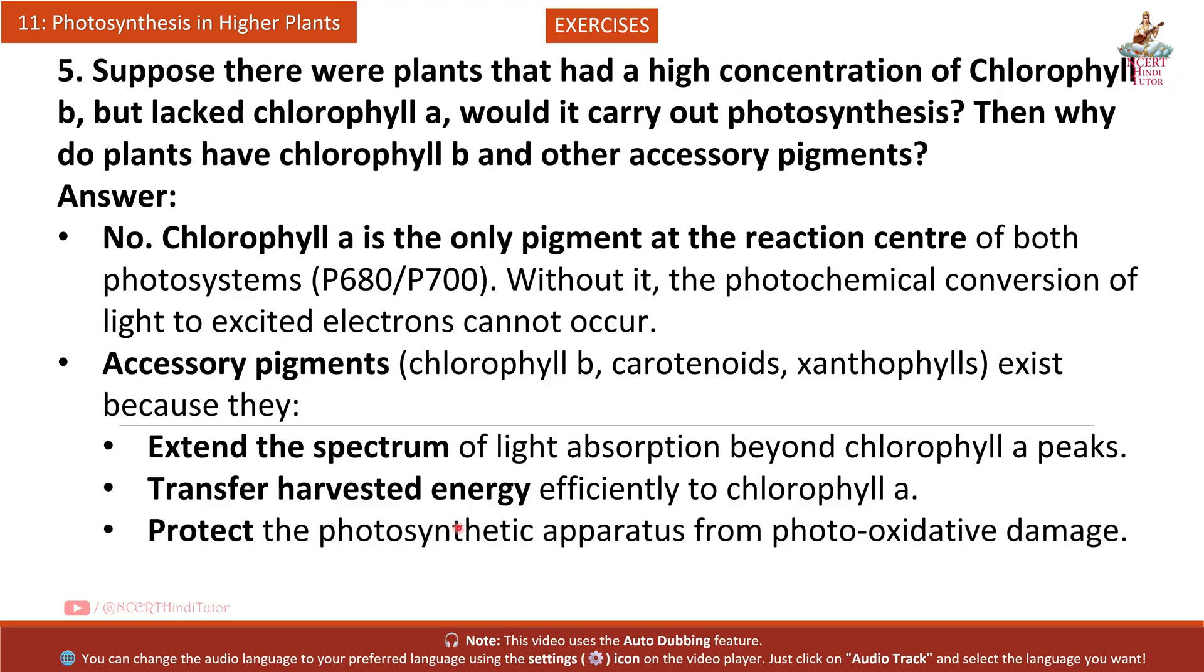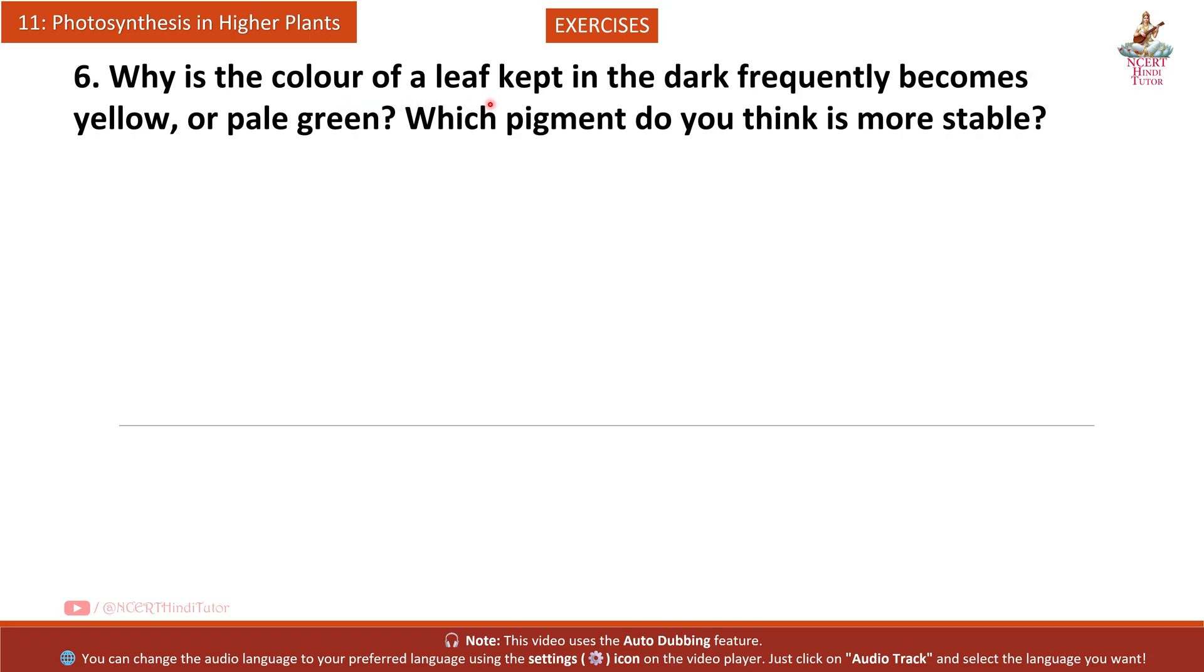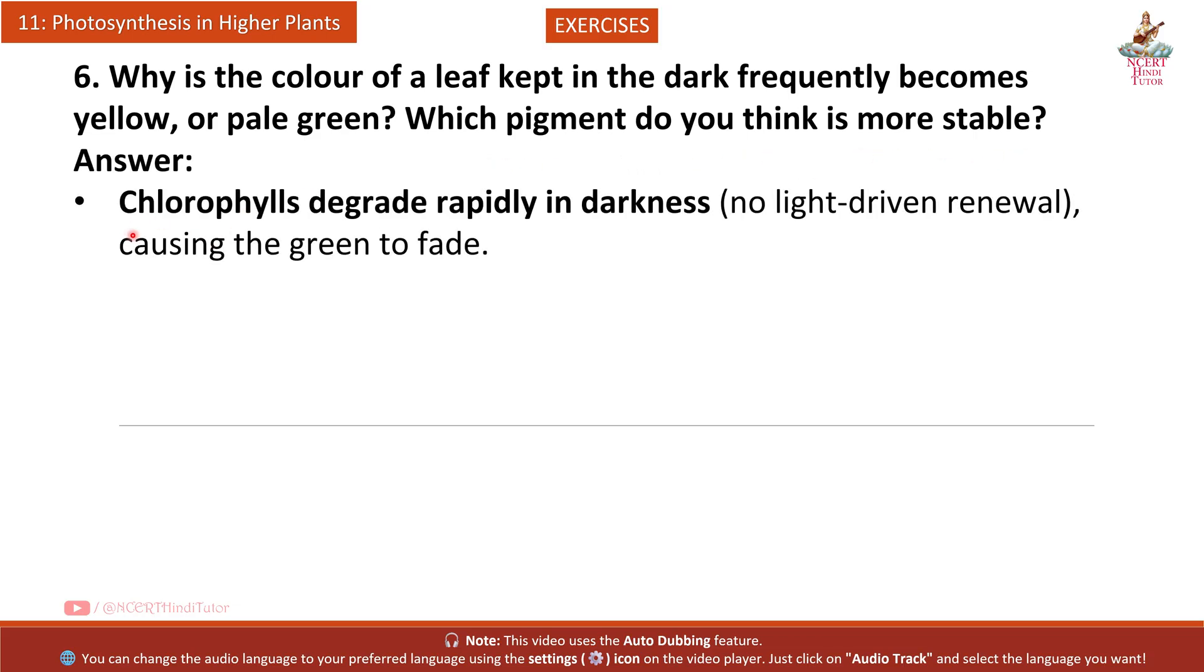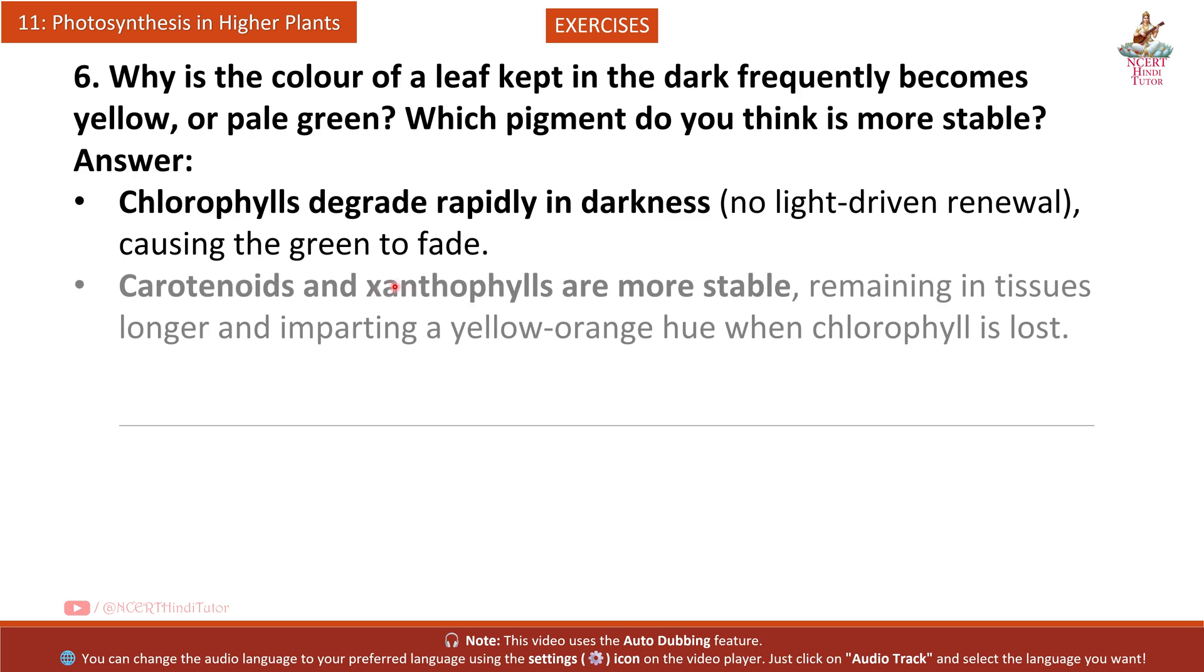Answer: No. Chlorophyll A is the only pigment at the reaction center of both photosystems P680 and P700. Without it, the photochemical conversion of light to excited electrons cannot occur. Accessory pigments - chlorophyll B, carotenoids, xanthophylls - extend the spectrum of light absorption beyond chlorophyll A peaks, transfer harvested energy efficiently to chlorophyll A, and protect the photosynthetic apparatus from photo-oxidative damage. Question 6: Why does the color of a leaf kept in the dark frequently become yellow or pale green? Which pigment is more stable?